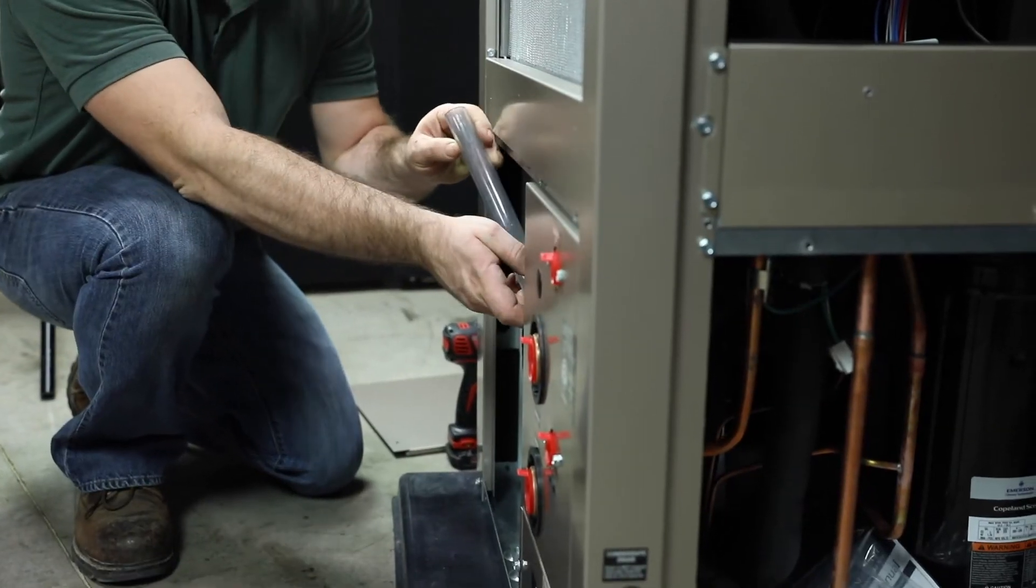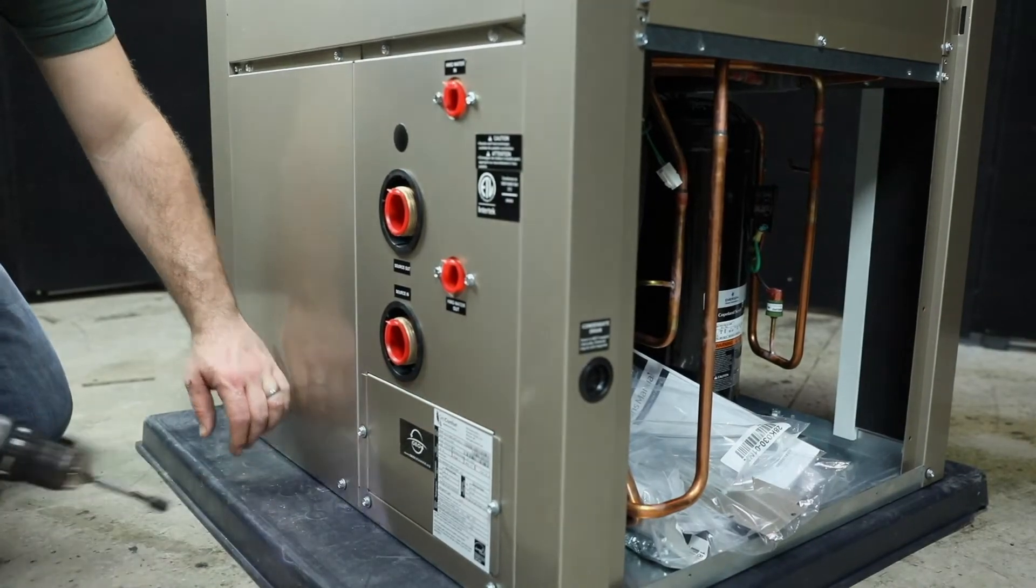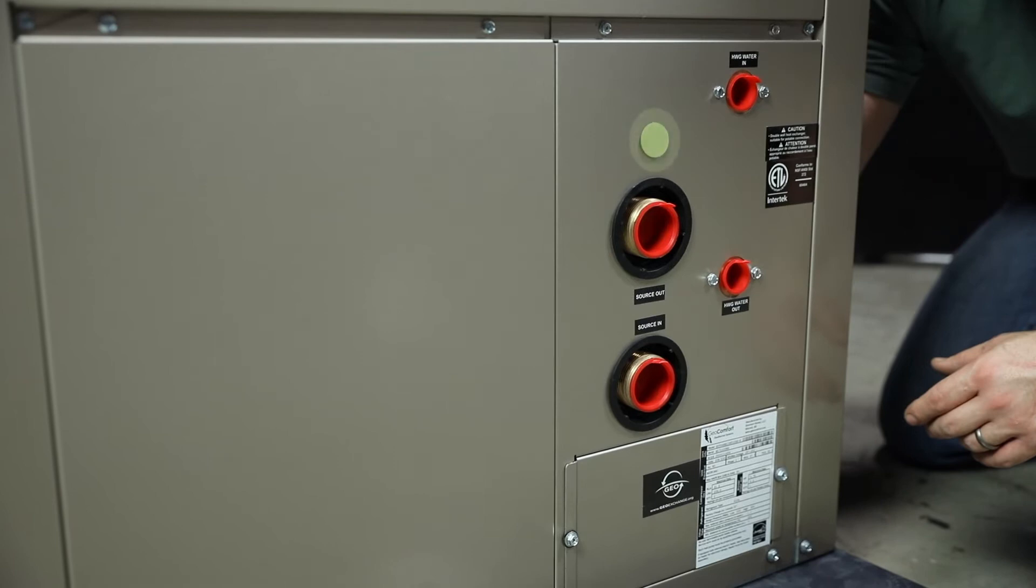With the condensate drain installed to the corner post, reinstall the lower left side rear panel. The pump kit will be installed onto this panel. Loosen and remove the small black plug above the water fittings. This opening will be used for the flow center conduit.